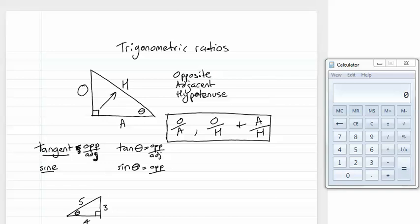And our last one is the cosine ratio, and its abbreviation is cos. And we say cos of the angle is adjacent over hypotenuse.